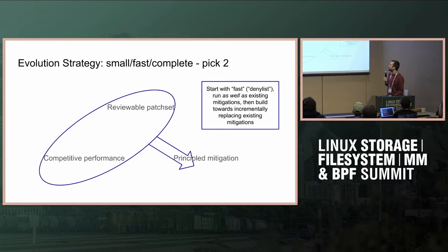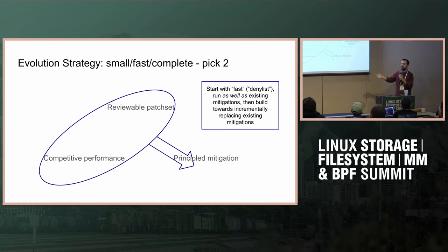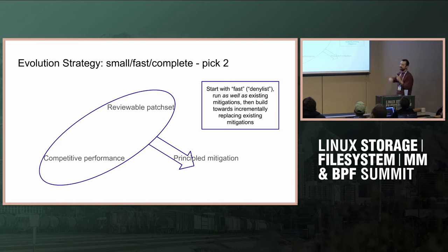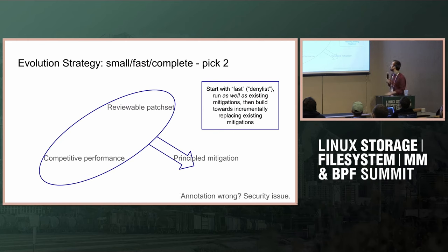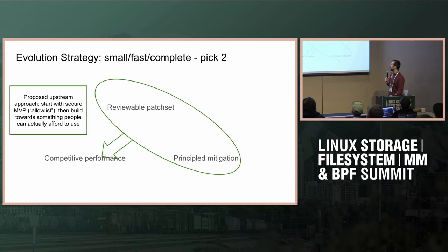In terms of attributes you'd want a patch set to have: it has to be small enough to review — that's non-negotiable; it should be reasonably fast; and it should be a complete mitigation. I think you only get to start with two of these. You can either have something that is fast and work from there — realistically running it alongside other mitigations, then working towards total mitigation while learning about performance characteristics — or you can start with something that mitigates everything completely, then work towards making it faster and faster.